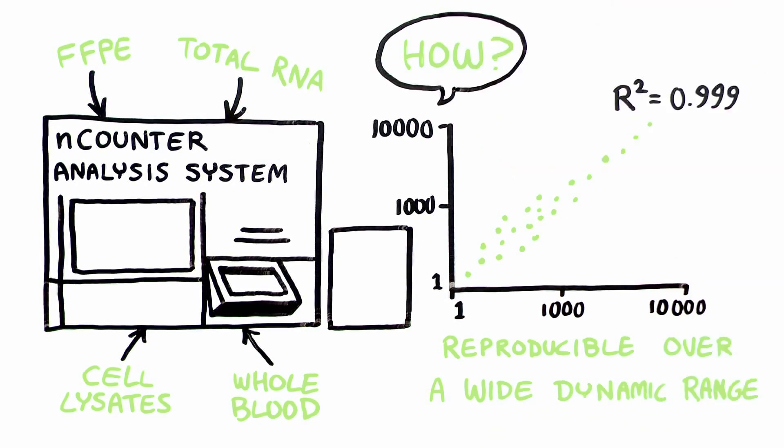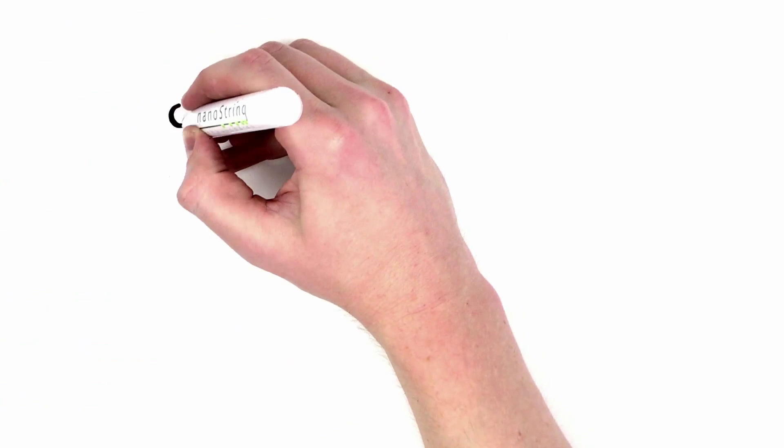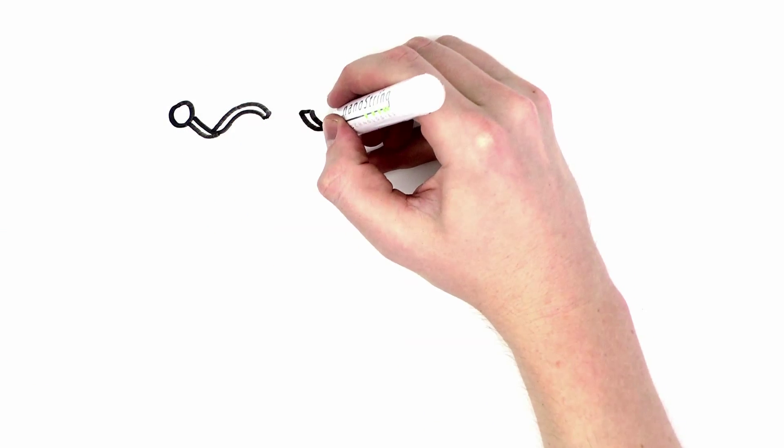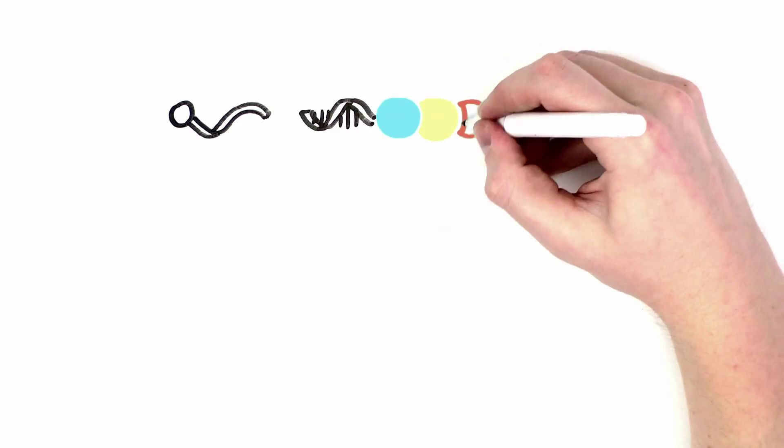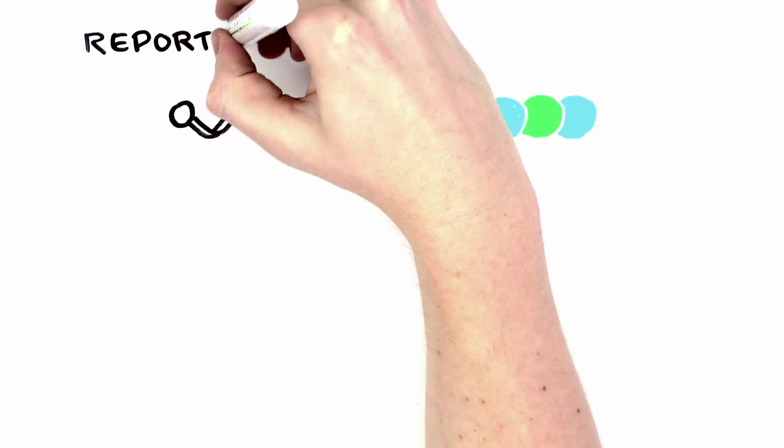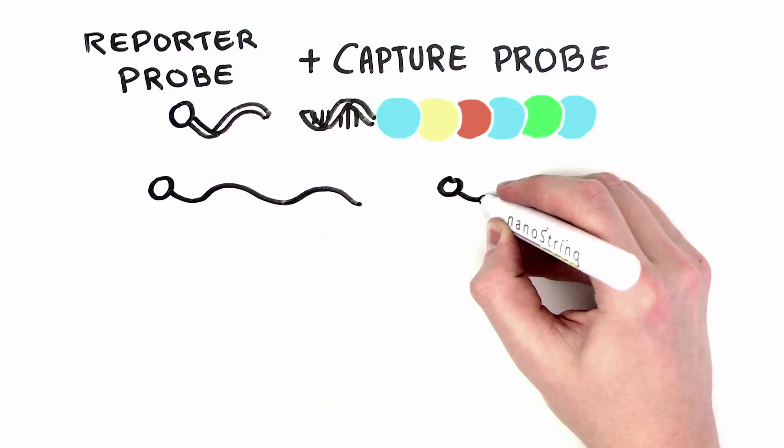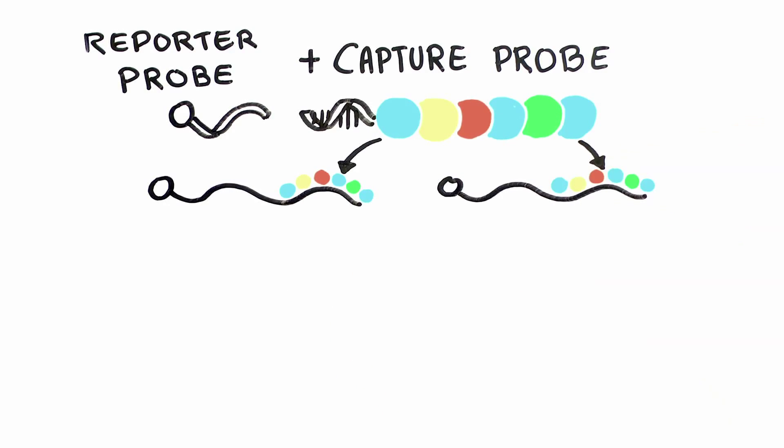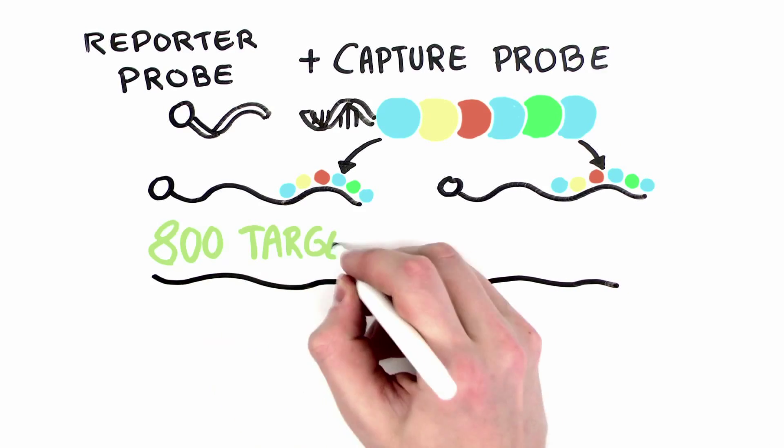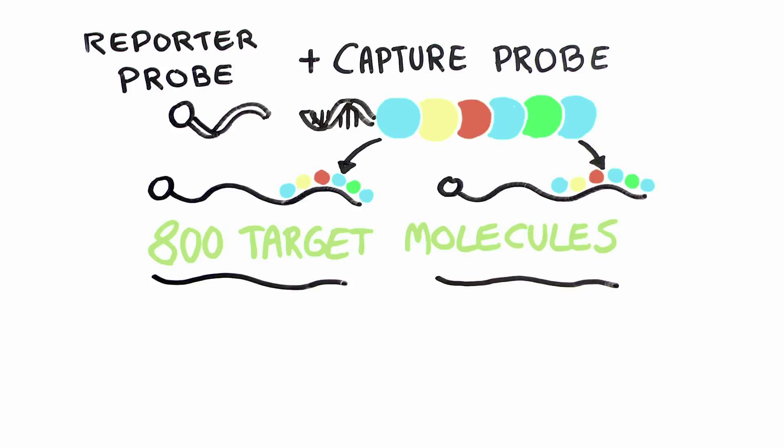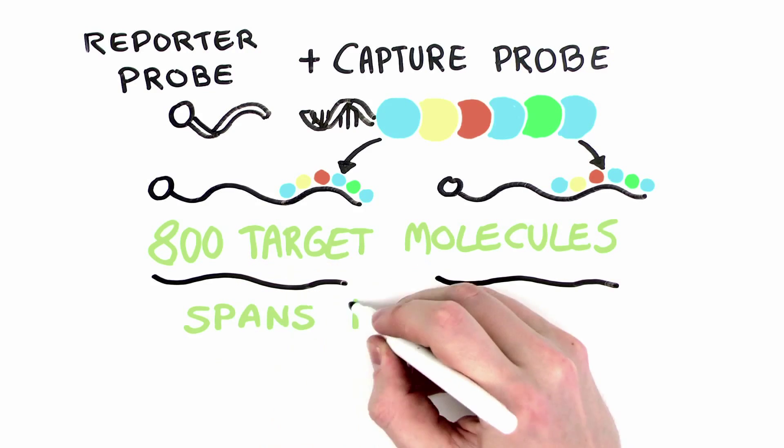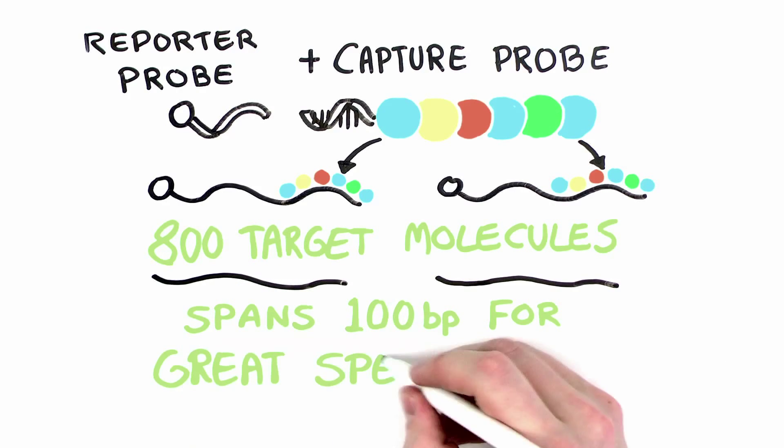How does all this work, you ask? The Encounter Analysis System uses molecular barcodes and single molecule imaging to detect and count hundreds of unique transcripts in the reaction. It measures up to 800 gene targets simultaneously in a single reaction. Then, based on the direct measurement of gene expression, you count individual transcripts with great specificity.